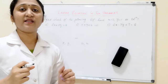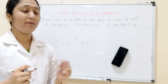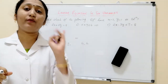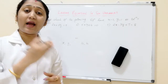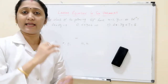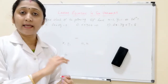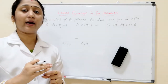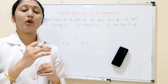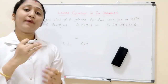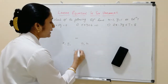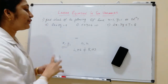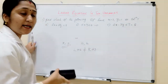A linear equation in two variables has two solutions — an X value and a Y value. If you substitute the values of X and Y into the equation and LHS is equal to RHS, then it is a solution. If LHS is not equal to RHS, then those values of X and Y are not a solution of that equation.